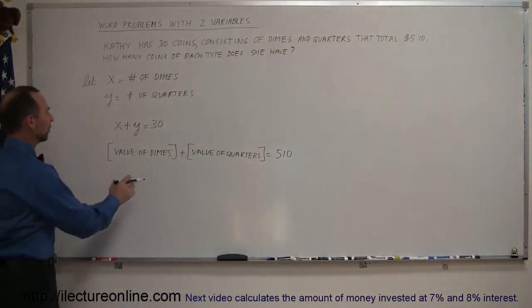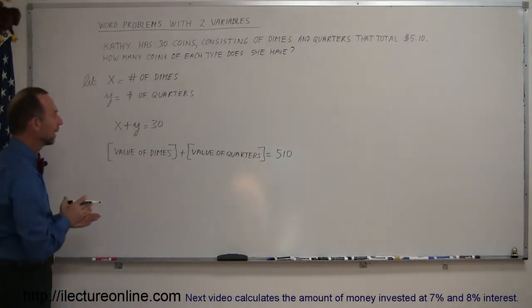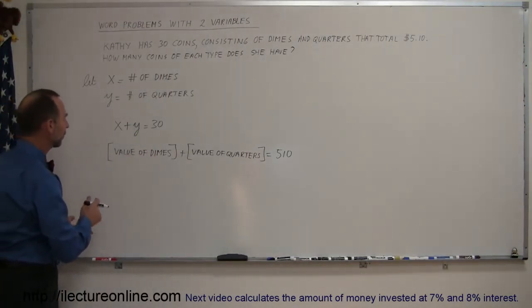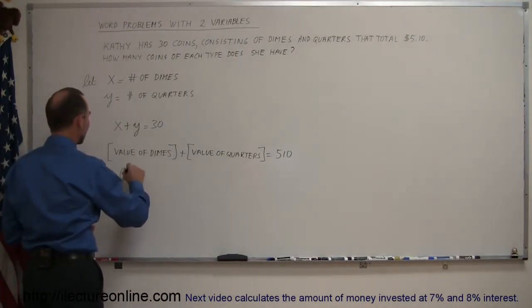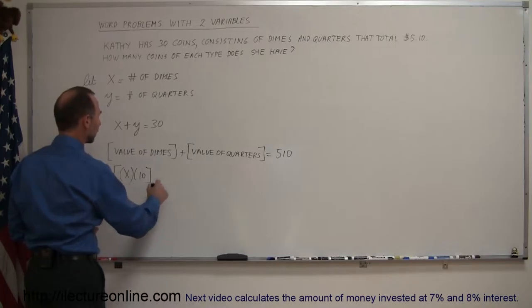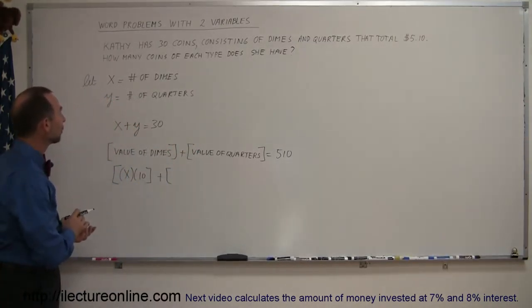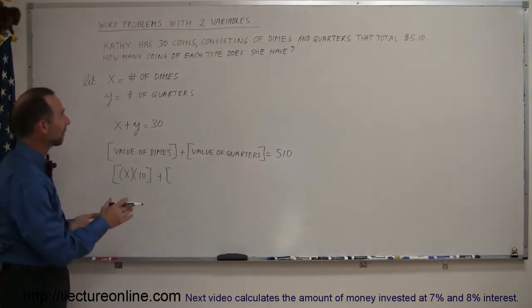How do you express the value of the dimes? Well, since each dime is worth 10 cents, and you have x number of dimes, then the number of dimes that you have times the value of each dime represents the total value of all the dimes. We add to that the value of all the quarters.